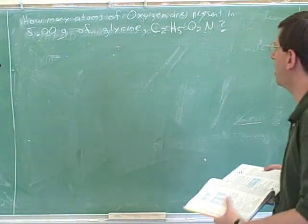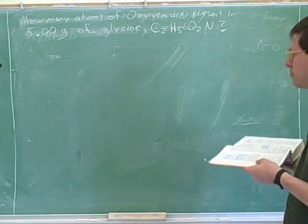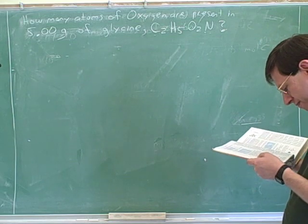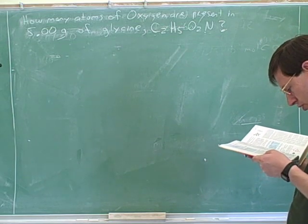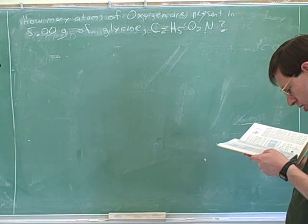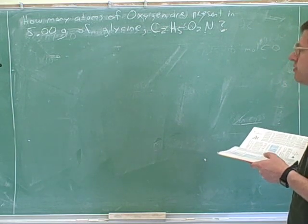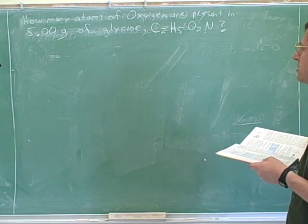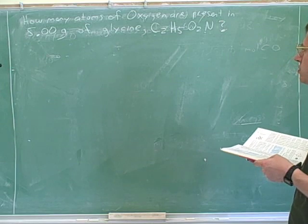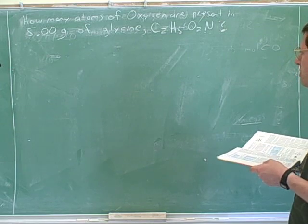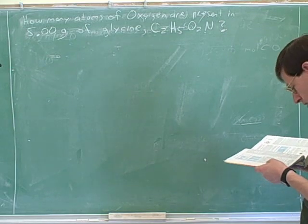How many atoms of oxygen are present in 5.00 grams of glycine, which is C2H5O2N?